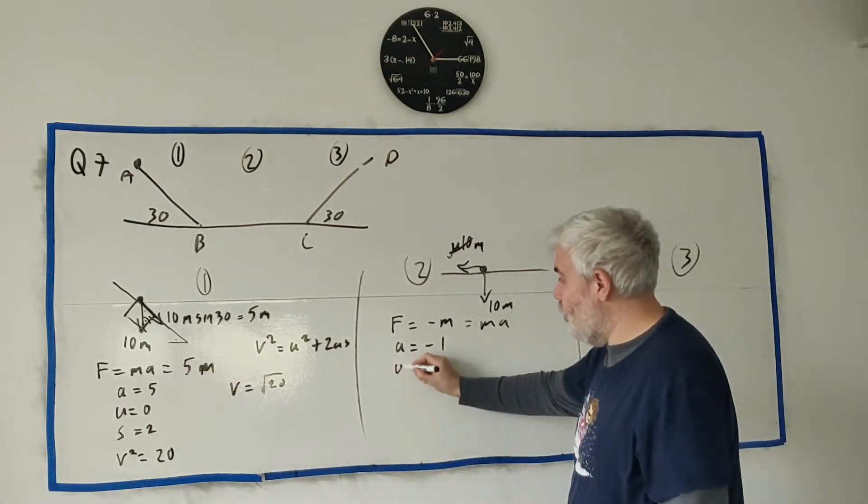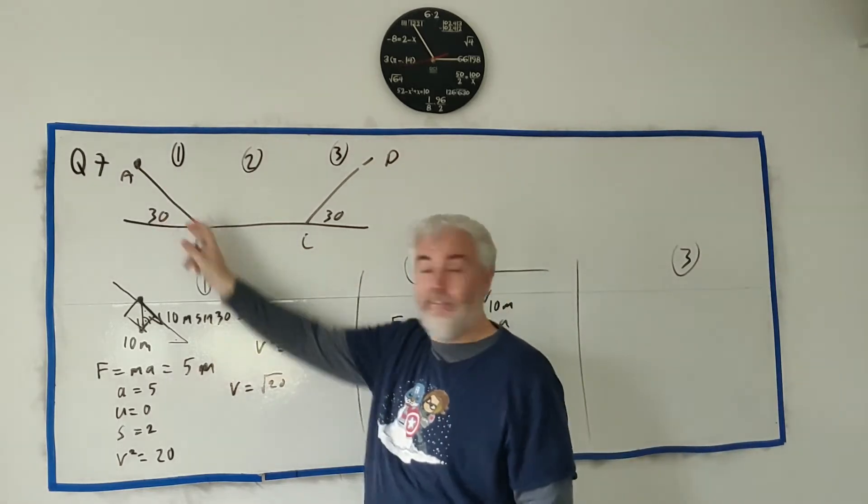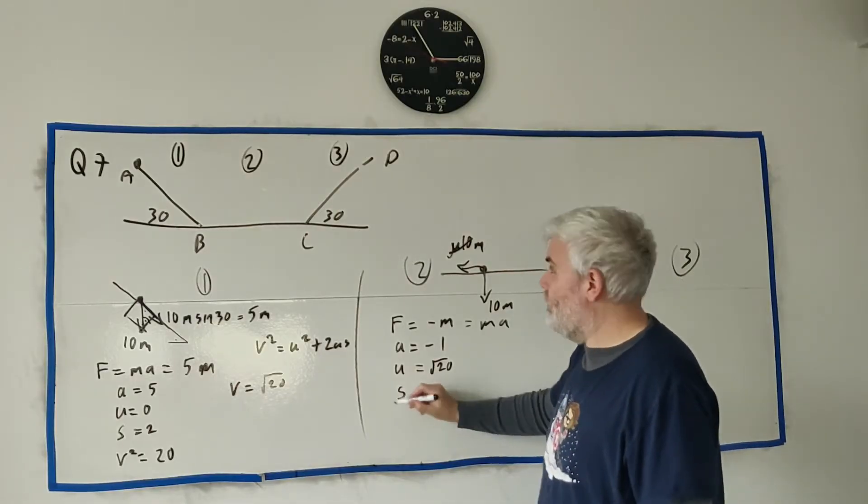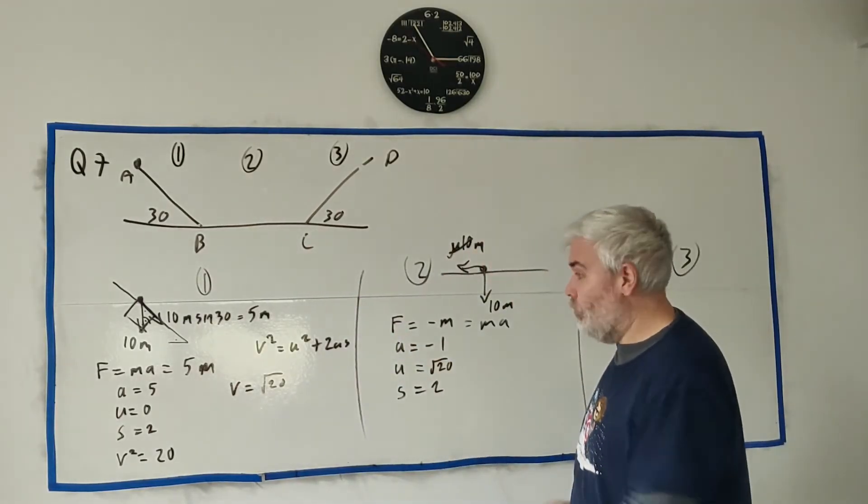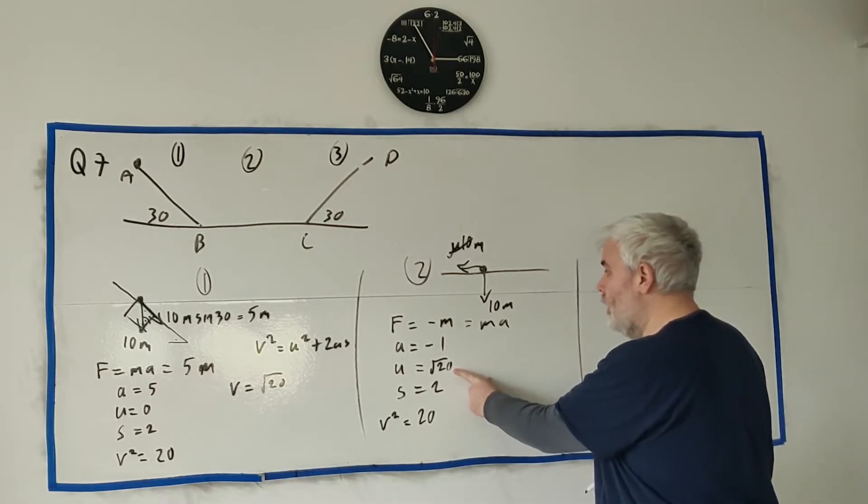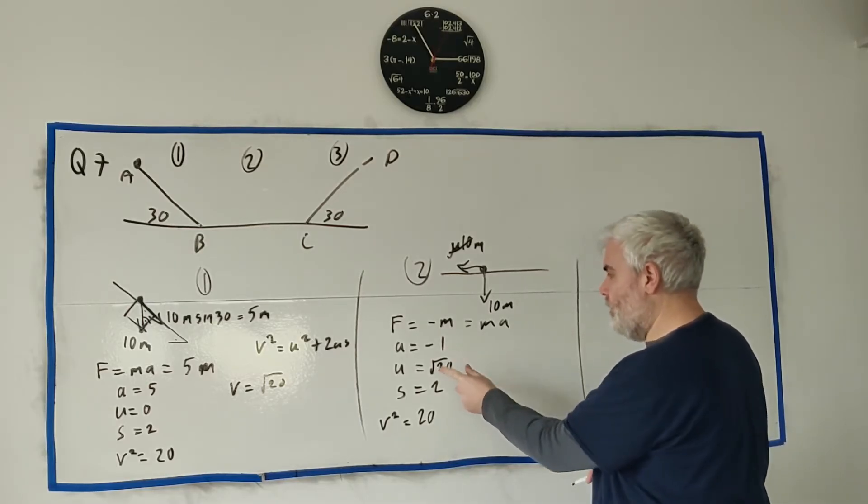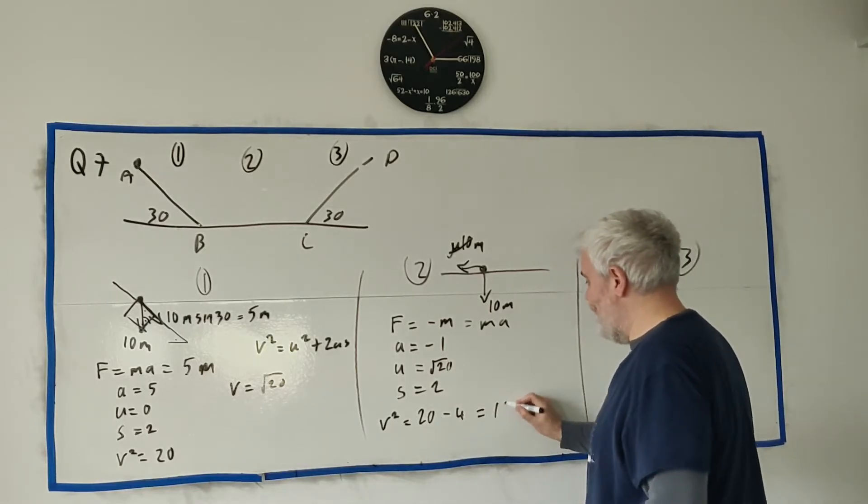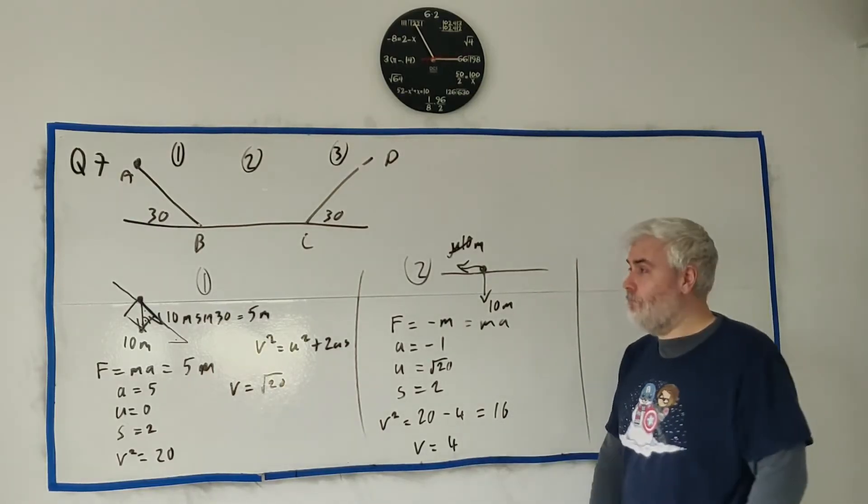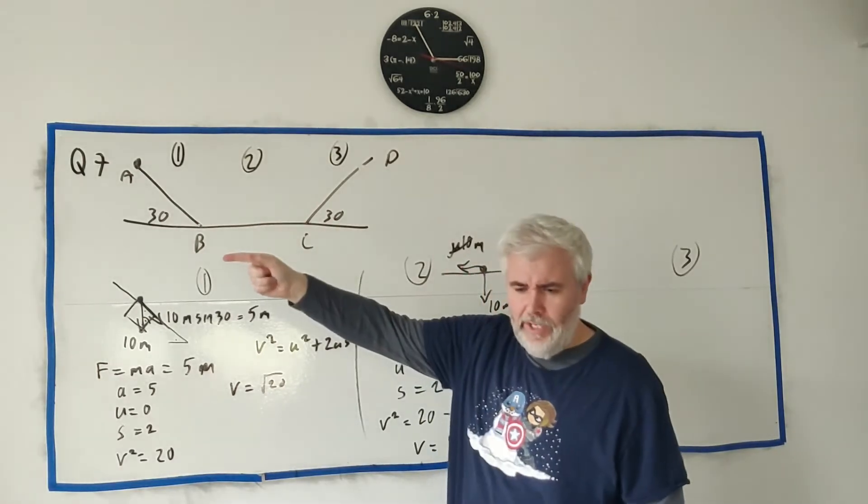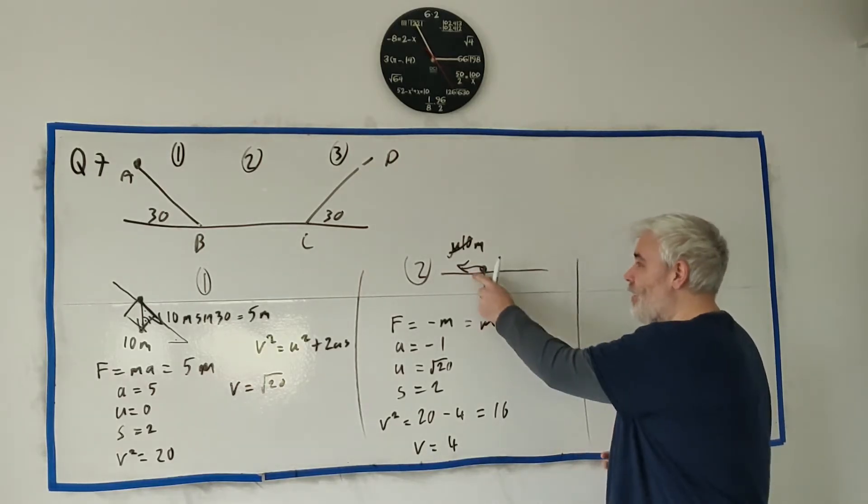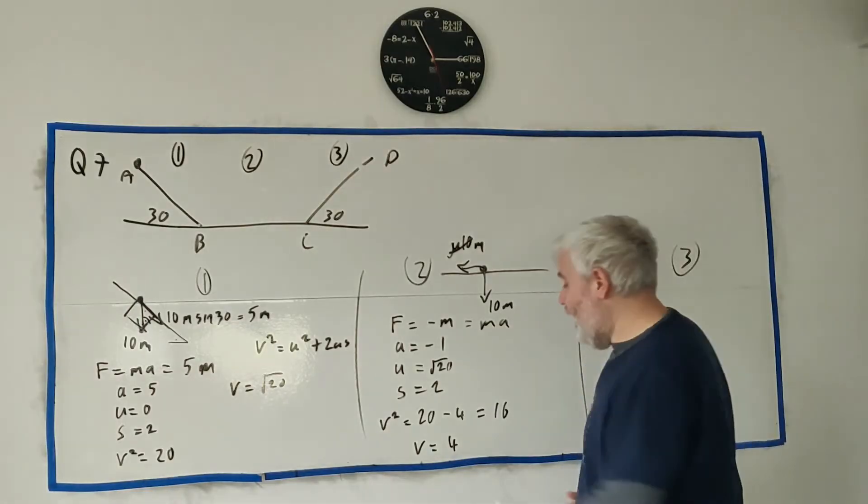We'll continue on. U at the start of this world must be the same as the end of that world, so square root of 20. Distance is still 2. V squared equals 20 plus 2 times a times s, so that's minus 4, which equals 16. We know we're dealing with positive here, so V equals 4. If the acceleration continued going that way we'd get to a negative, but it wouldn't because the deceleration was coming from friction.